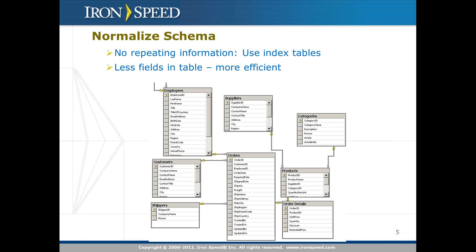First and foremost, you have to normalize your schema. Without going into the formal definitions of first, second, or third normal forms, the common idea of normalization is that you don't have repeating information in any table. For example, using the Northwind database as a standard example, you can see an orders table. Each order might have a shipper — just a name and phone number. You can imagine that each order has a shipper name like Federal Express, but that information would be repeated across multiple orders.